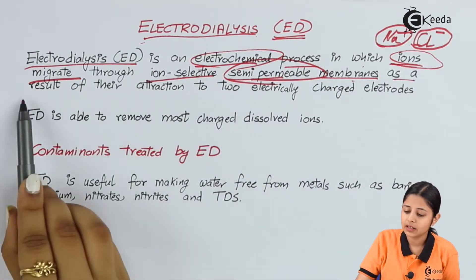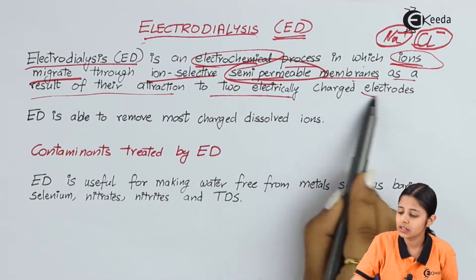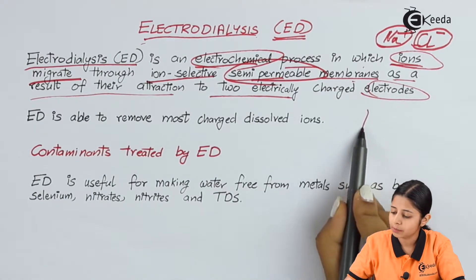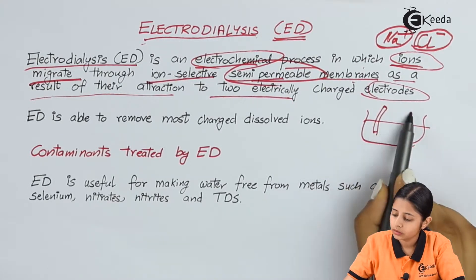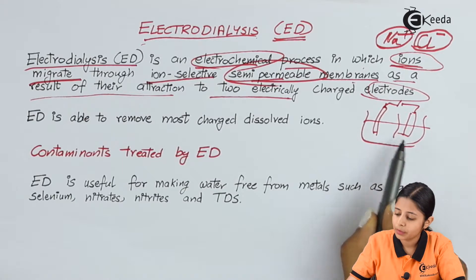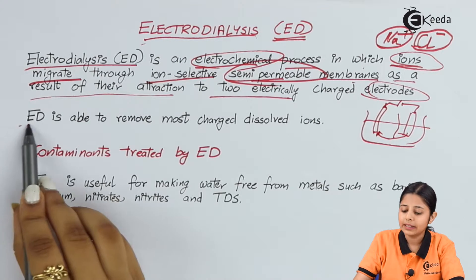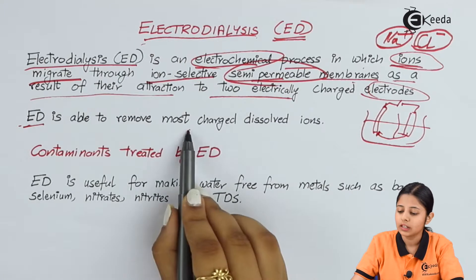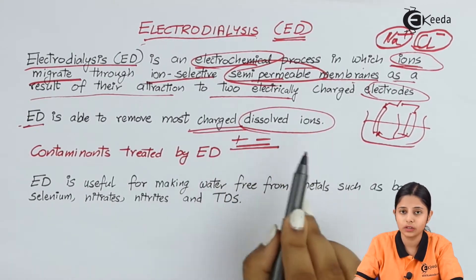The ions migrate through semi-permeable membranes as a result of attraction to the two electrically charged electrodes. These electrodes can be positive and negative. If I have a water sample, I can put two electrodes and provide a potential difference, with a semi-permeable membrane in between, and the ions will flow from one end to the other. ED, that is electrodialysis, is able to remove most charged dissolved ions — either positively or negatively charged — as long as they are dissolved in water.